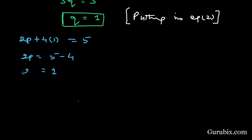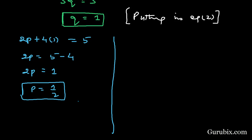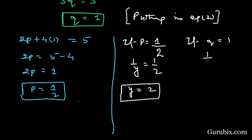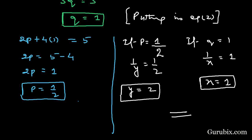So 2p equals 1, which means p equals 1 over 2. Now we can find x and y: since p equals 1 over 2, we have 1 over y equals 1 over 2, so y equals 2. Since q equals 1, we have 1 over x equals 1, so x equals 1. This is the solution. Thank you.